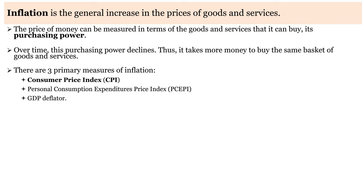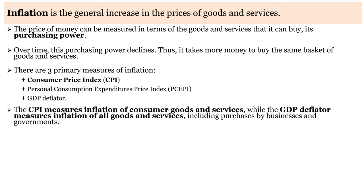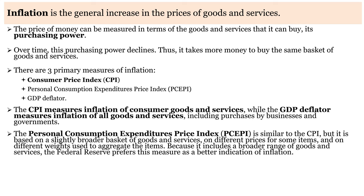These are the three primary measures of inflation. The CPI measures inflation of consumer goods and services, while the GDP deflator measures inflation of all goods and services, including purchases by businesses and governments. The personal consumption expenditures price index is similar to the CPI, but it is based on a slightly broader basket of goods and services, on different prices for some items, and on different weights used to aggregate the items. Because it includes a broader range of goods and services, the Federal Reserve prefers this measure as a better indication of inflation.